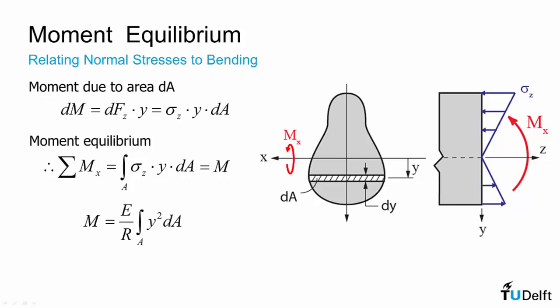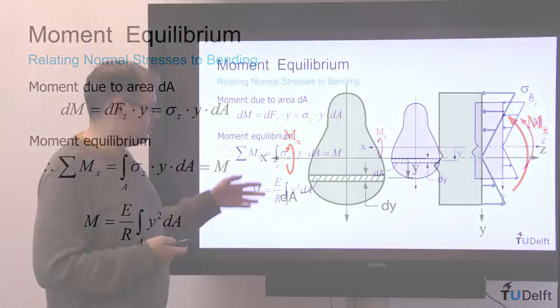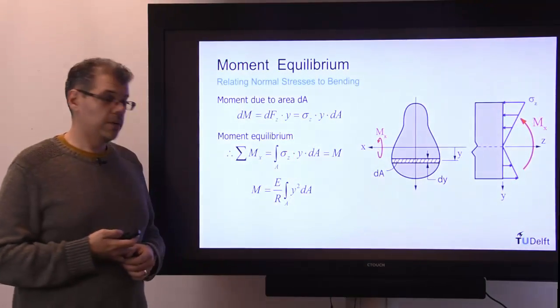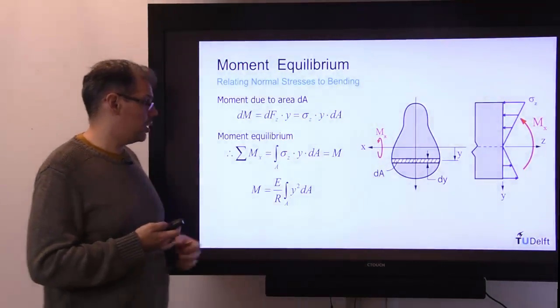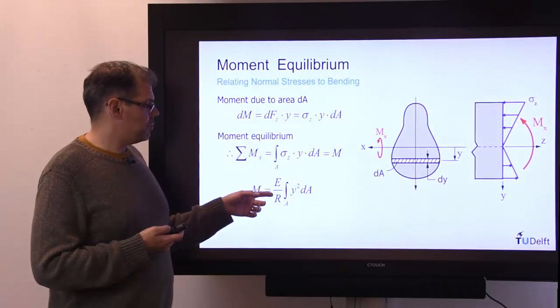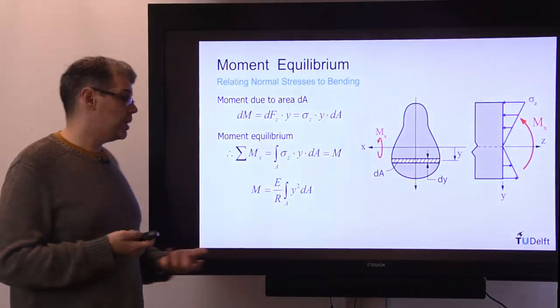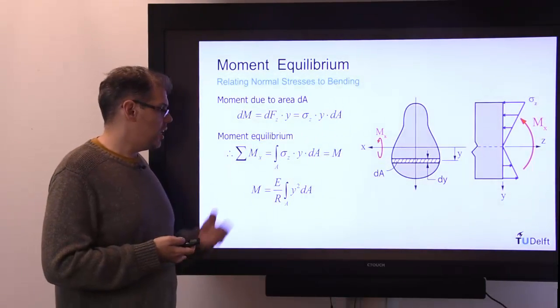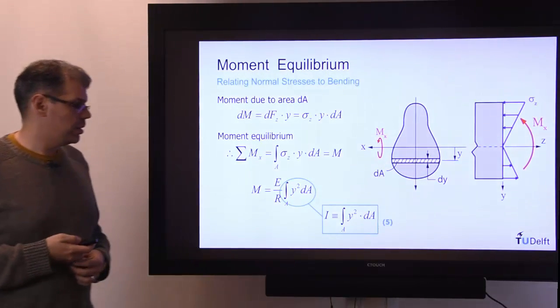If we again substitute in the result for sigma z, we get e times r times y, sorry, e over r times y. So then we end up getting e over r pulled out of the integral, because they're constant at a given section, and we get the integral of y squared da.